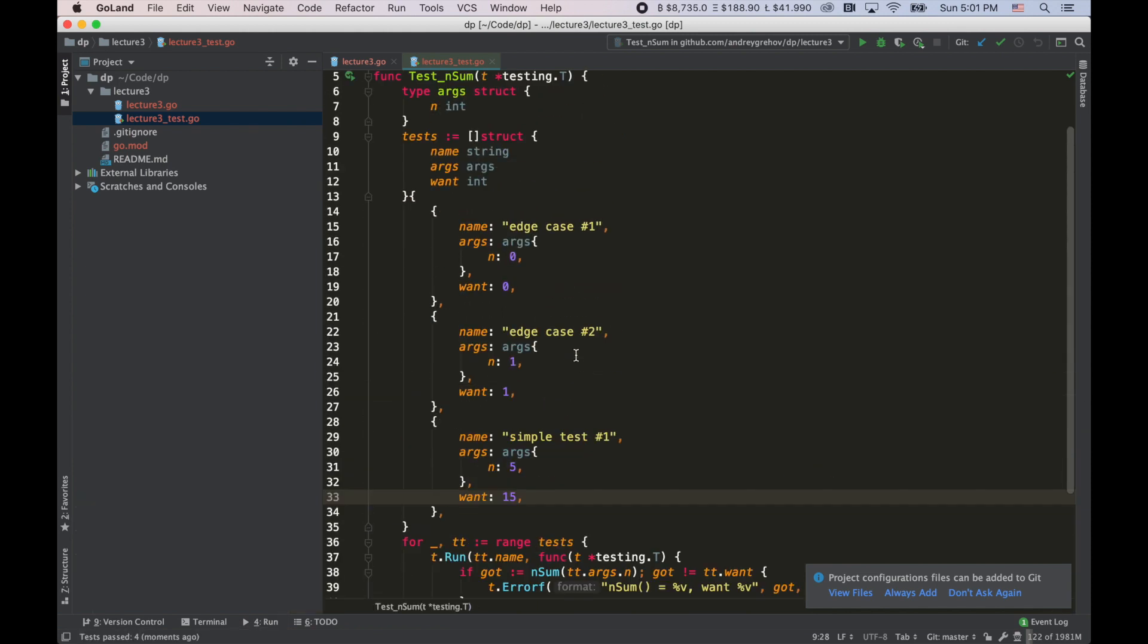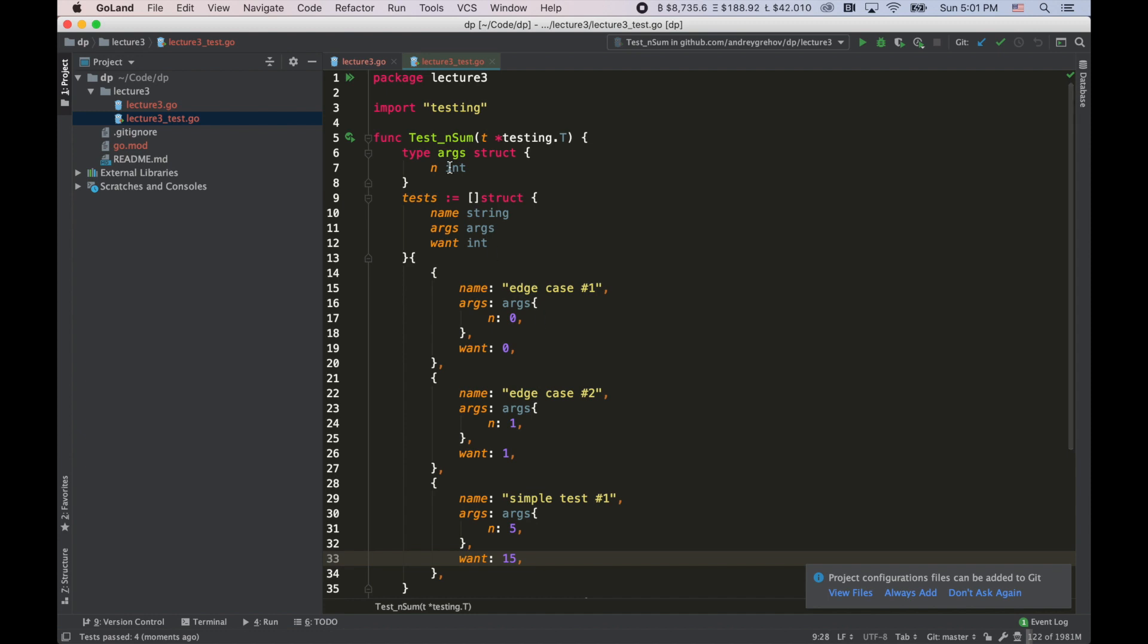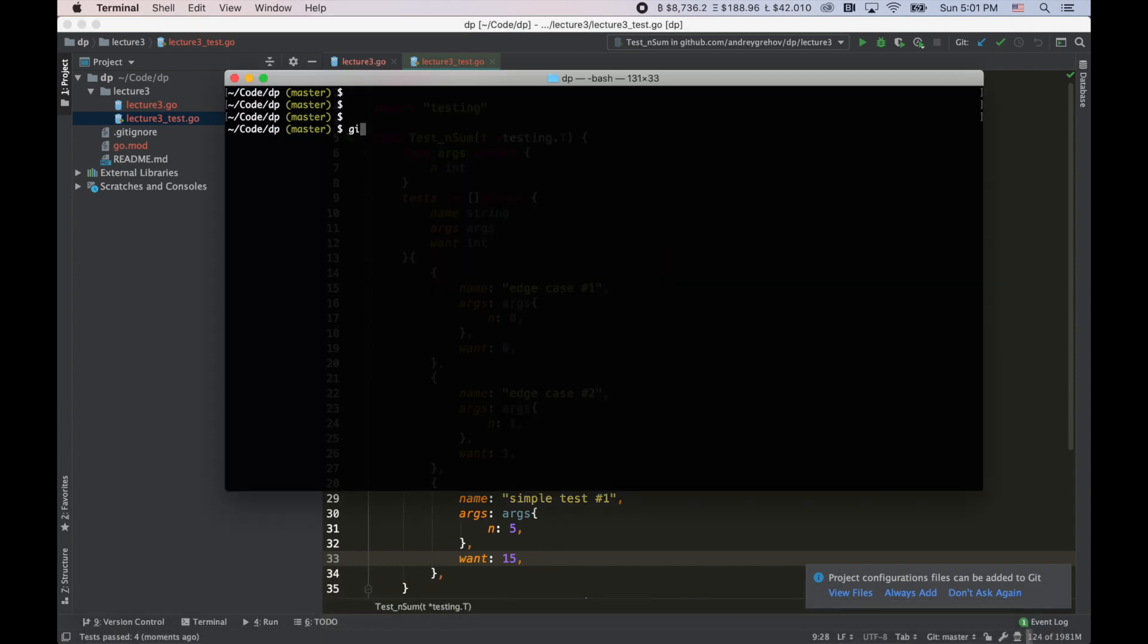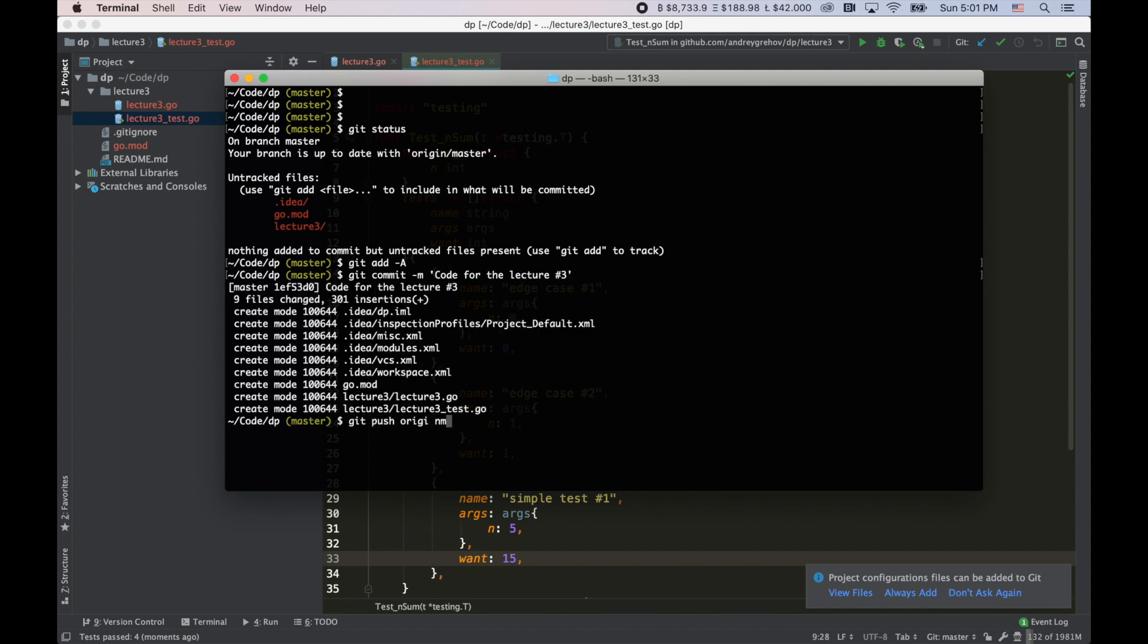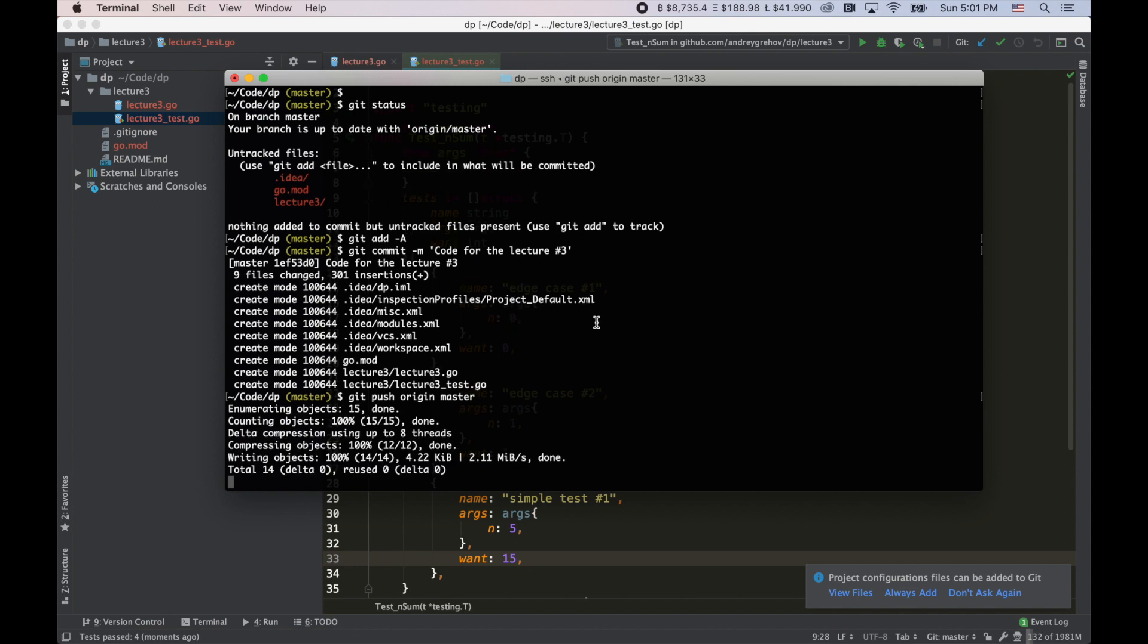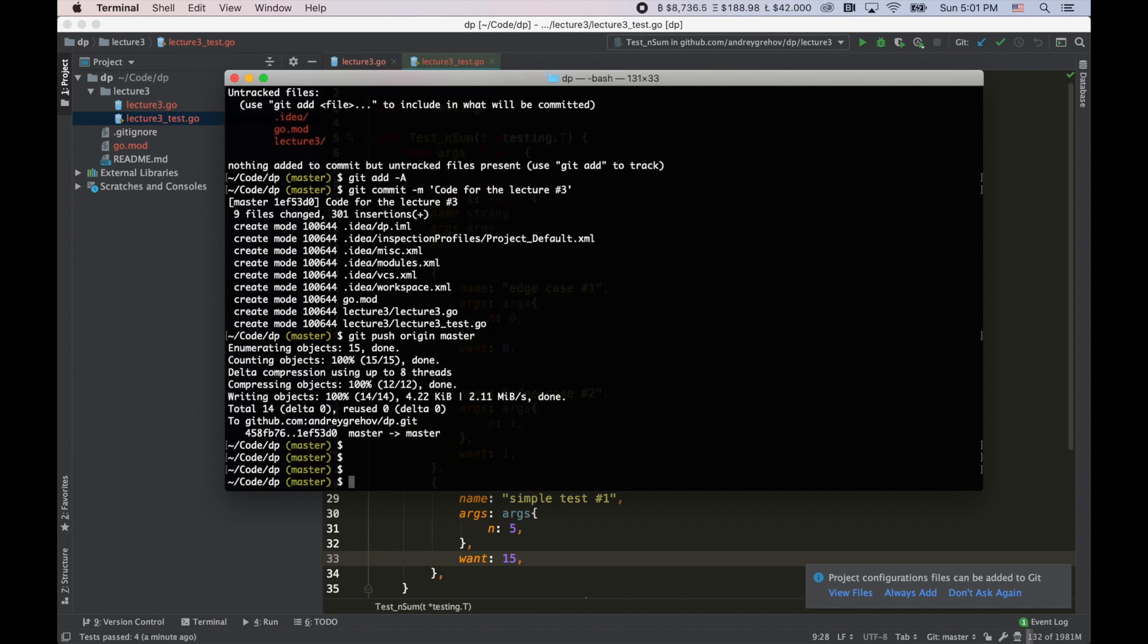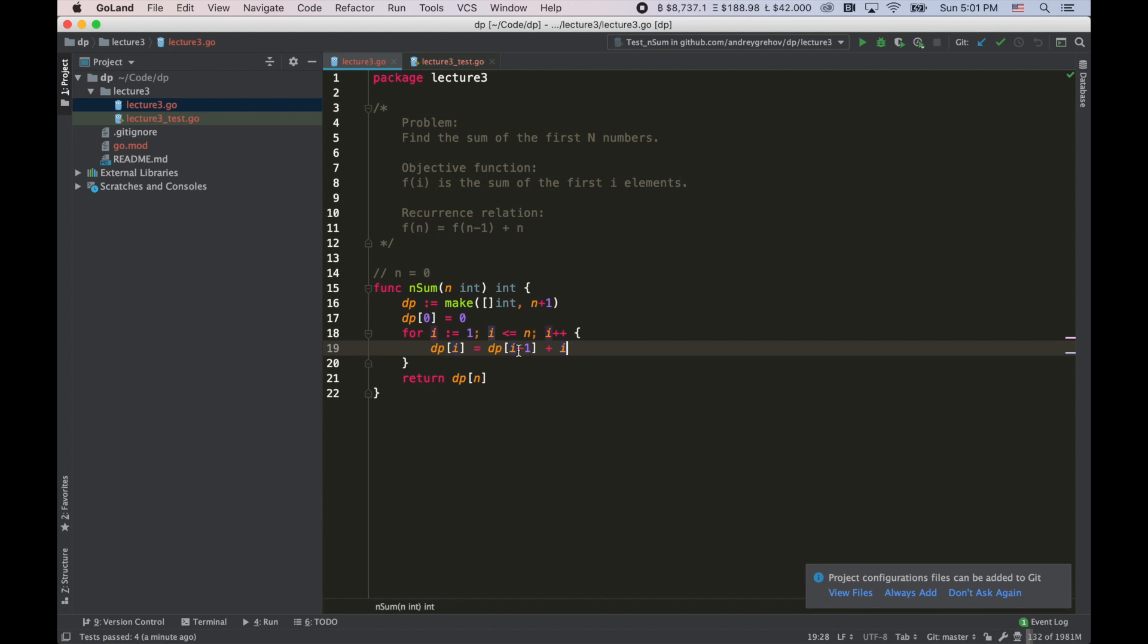And now, the last part that I would like to do here is to commit our code to GitHub, so that you guys have access to it. And let's do it right now. We'll add all the files. We'll commit it with the message code for the lecture number 3. And push it to master. Great. The link to the repository is going to be in the description, so you now have access to the code. Please review it. If you have any questions, feel free to ask me. Otherwise, enjoy the rest of your day, and I'll see you guys next Sunday. Bye!